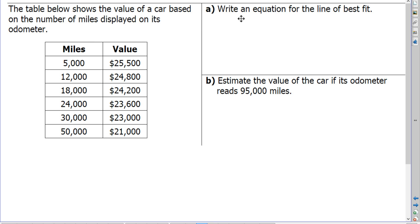Part A asks us to write an equation for the line of best fit, also known as the linear regression equation. And part B says to estimate the value of the car if its odometer reads 95,000 miles. So we're going to answer letter B based on the equation that we create from part A.